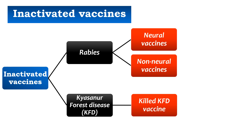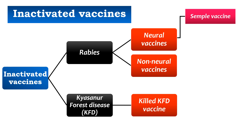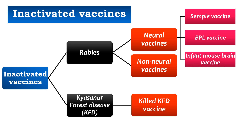Under neural vaccines against rabies: the first is the Semple vaccine, derived from infected sheep brain and inactivated with phenol. The second is the BPL vaccine — BPL stands for beta-propiolactone — a modified version of the Semple vaccine inactivated with beta-propiolactone instead of phenol. The third neural vaccine is the infant mouse brain vaccine, derived from infected neural tissues of newborn mice.